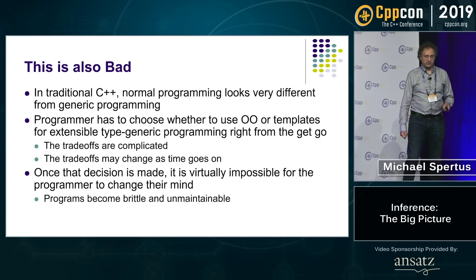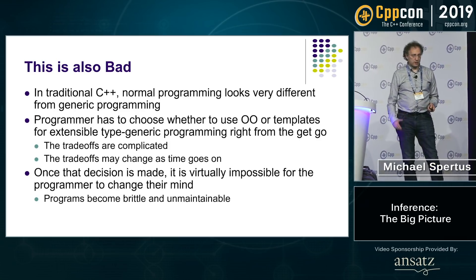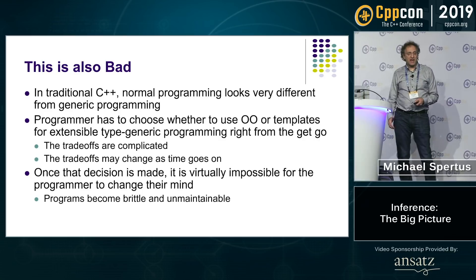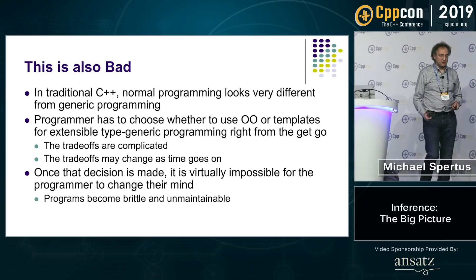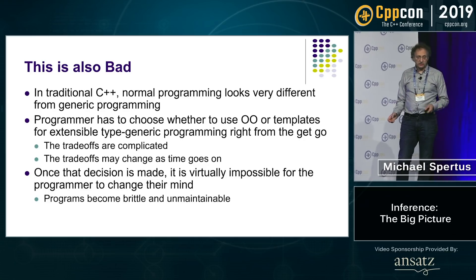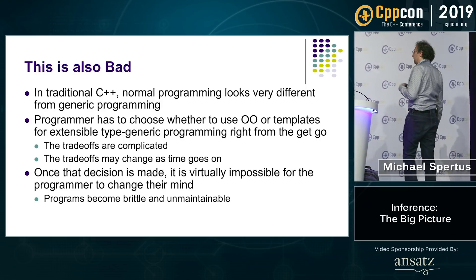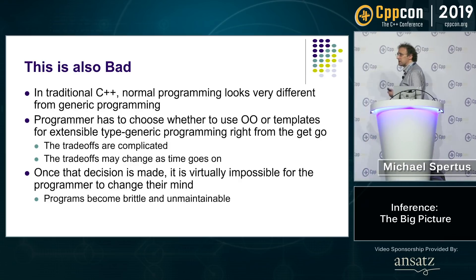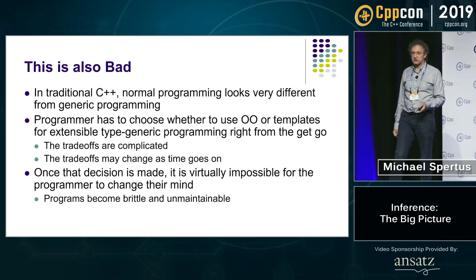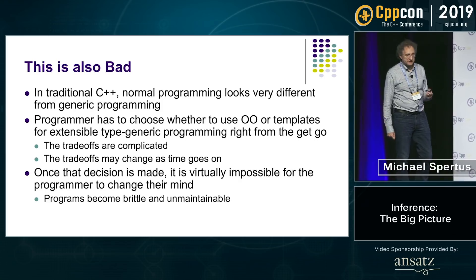Once programmers make that decision, it's virtually impossible to change their mind. The trade-offs are complicated and may change over time. The inability to change your mind about decisions for which the right answer may change is what makes programs brittle, unmaintainable, and hard to evolve.